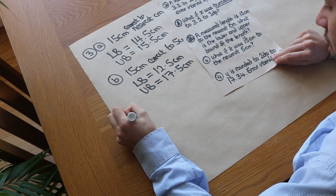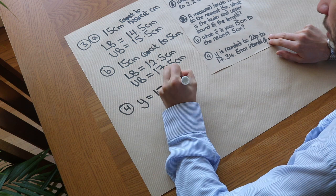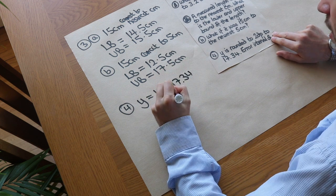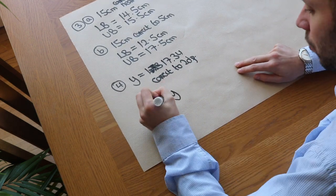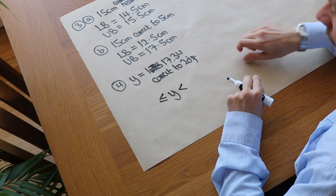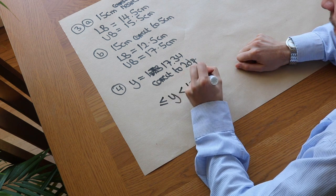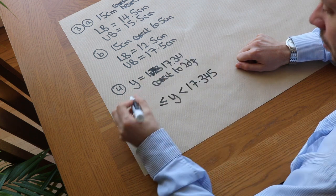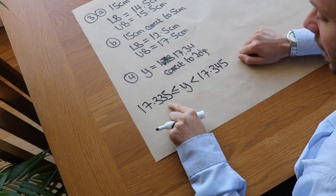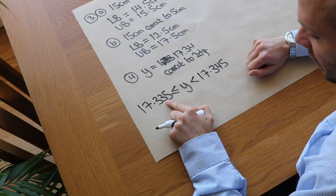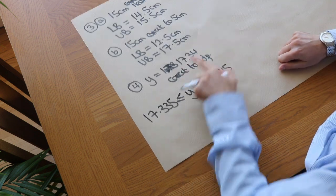Finally, Y is rounded to two decimal places to give 17.34. What is the error interval of Y? For the upper bound, we put a 5 on the end: 17.345. For the lower bound, we reduce the last digit by 1 and add a 5: 17.335. Checking: 17.335 to two decimal places — look at the second decimal digit, check the digit after: it's 5, which is greater than or equal to 5, so it rounds up to 4, giving 17.34. Correct! So the error interval is 17.335 ≤ Y < 17.345.